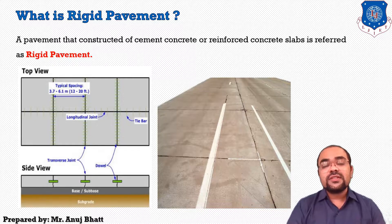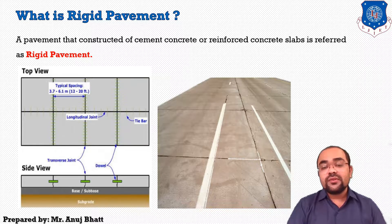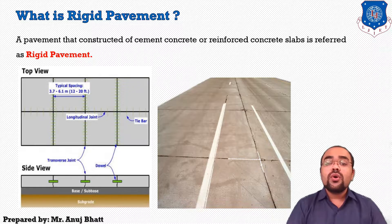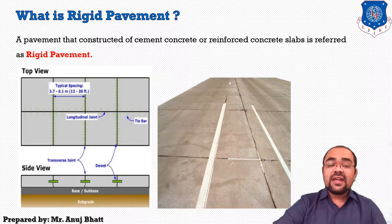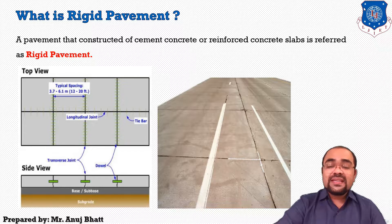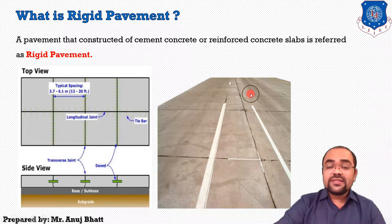Pavement constructed of cement concrete or reinforced concrete slab is generally referred to as rigid pavement. Here we have two different images of rigid pavement. The first shows the top view and side view, and the next image shows the upper surface where you can identify the longitudinal joints and transverse joints.